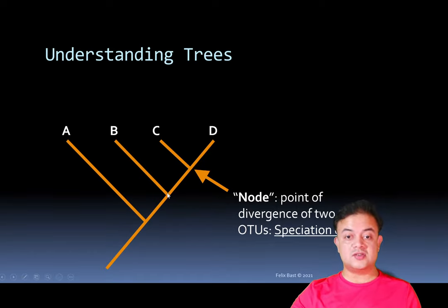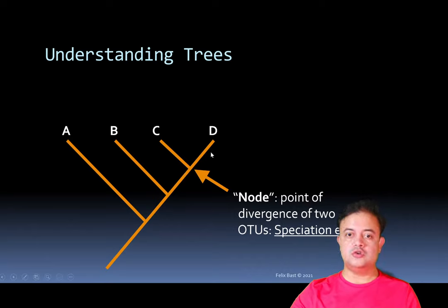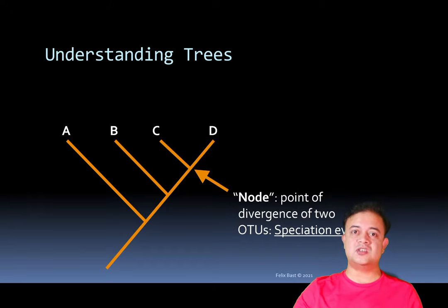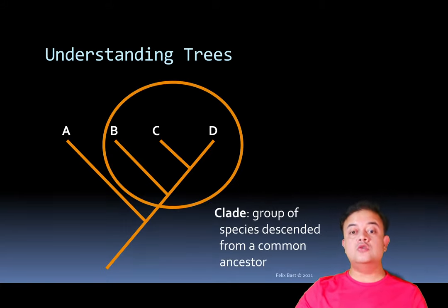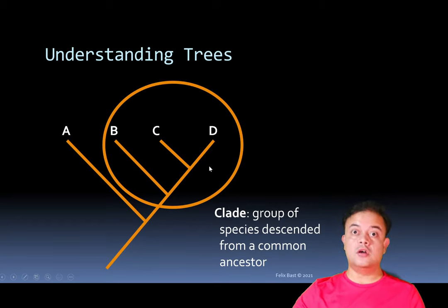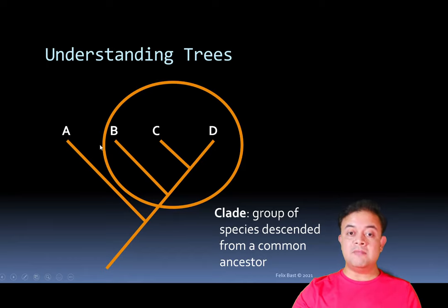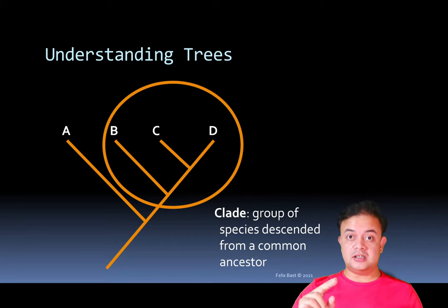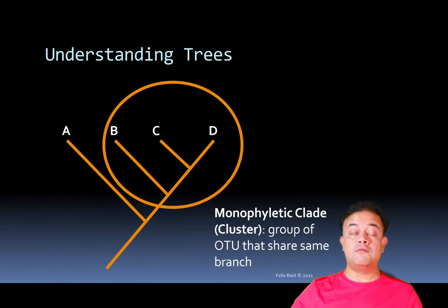A node is the point of divergence of two operational taxonomic units — that is, a speciation event. From this ancestral population, divergence into two daughter populations occurs. The most common form of speciation is allopatric speciation due to vicariance — a geographical barrier. A clade means a group of species descended from one common ancestor. If you imagine the tree topology as a wire, a clade is what you can cut off with just one cut.